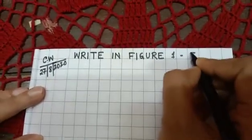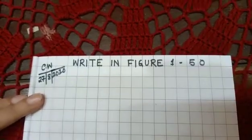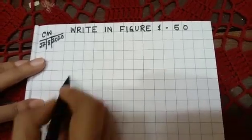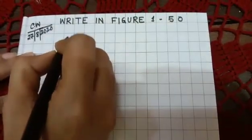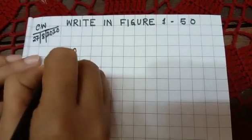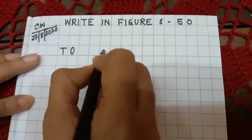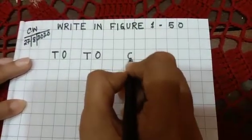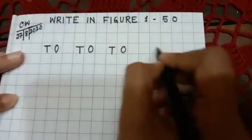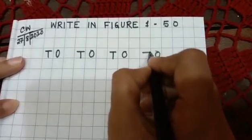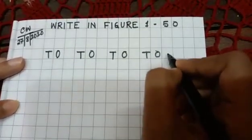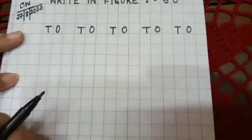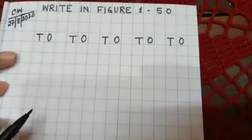Write in figure 1 to 50. So leave two boxes and write ones, tens. Leave one box and write ones, tens again. You leave one box and write ones, tens again. You leave one box and write ones, tens again. You leave one box and write ones, tens. Let's start.